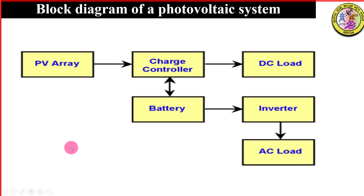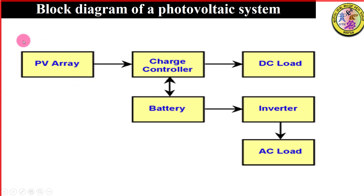This is a simple block diagram of a solar PV (Photovoltaic) system. PV modules are the solar panels. Solar panels connect to the charge controllers. Charge controllers connect to the battery.